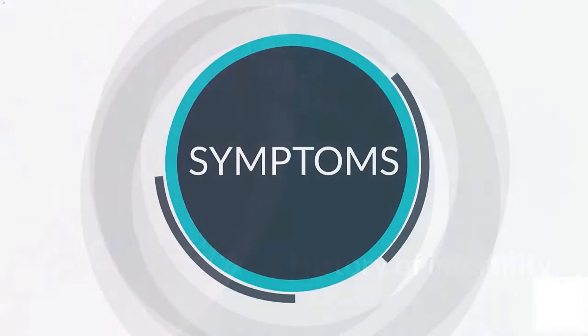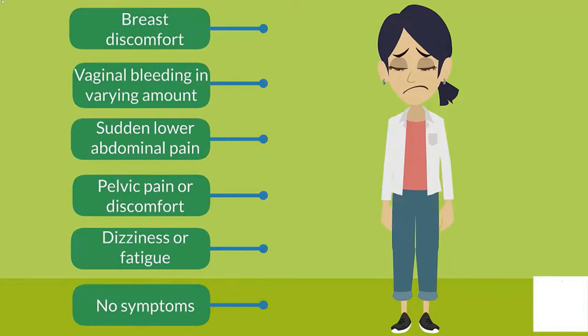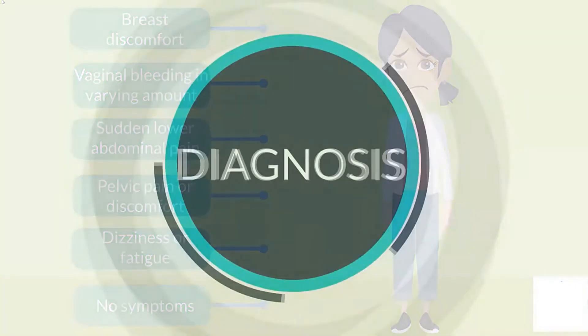Next I will discuss the symptoms of ectopic pregnancy. These are: breast discomfort, vaginal bleeding in varying amounts, sudden lower abdominal pain, pelvic pain or discomfort, dizziness or fatigue. And sometimes there will not be any symptoms.